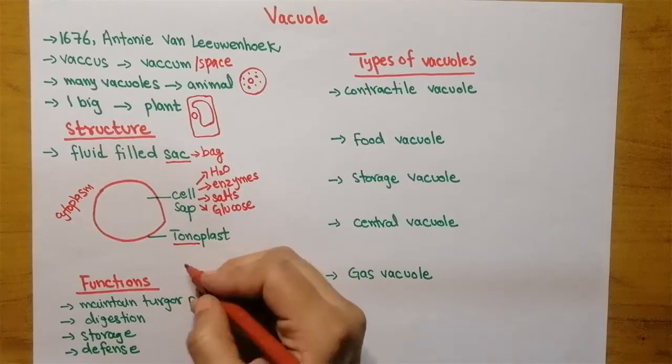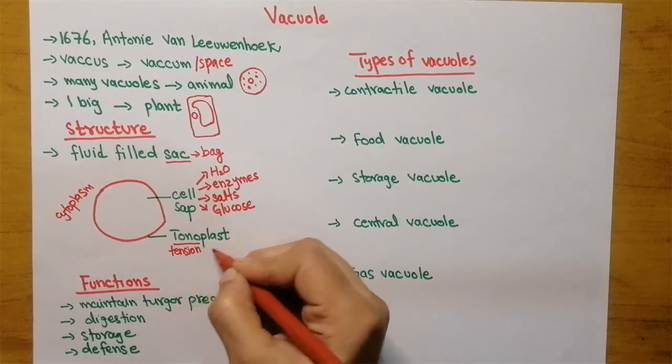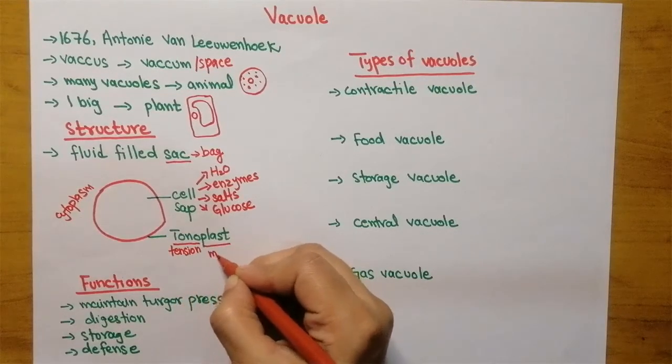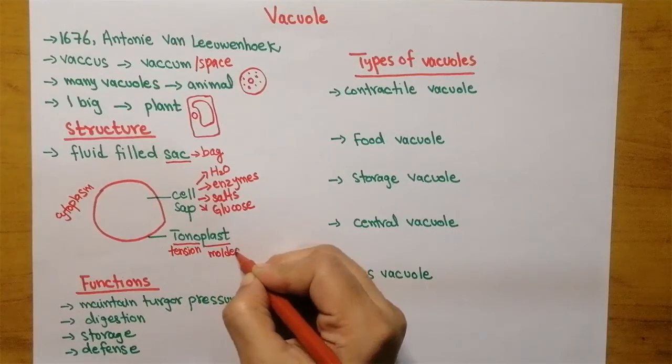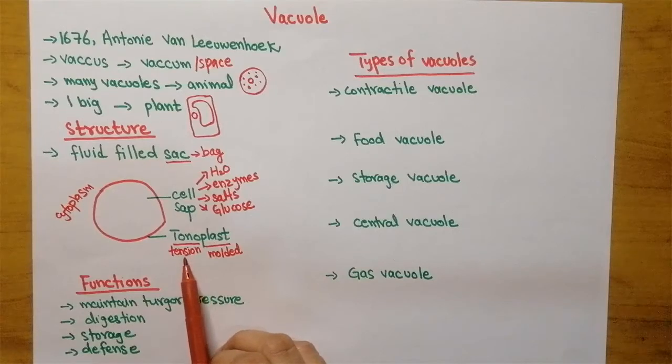The word tonoplast - tono means tension while plast means molded. So tonoplast means that it molds the tension or is able to withstand the tension.